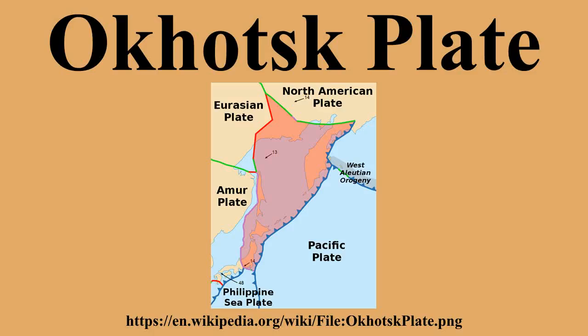GPS measurements and other studies show that the Okhotsk plate is slowly rotating in a clockwise direction. Models indicate that it rotates 0.2 degrees per million years about a pole located north of Sakhalin.